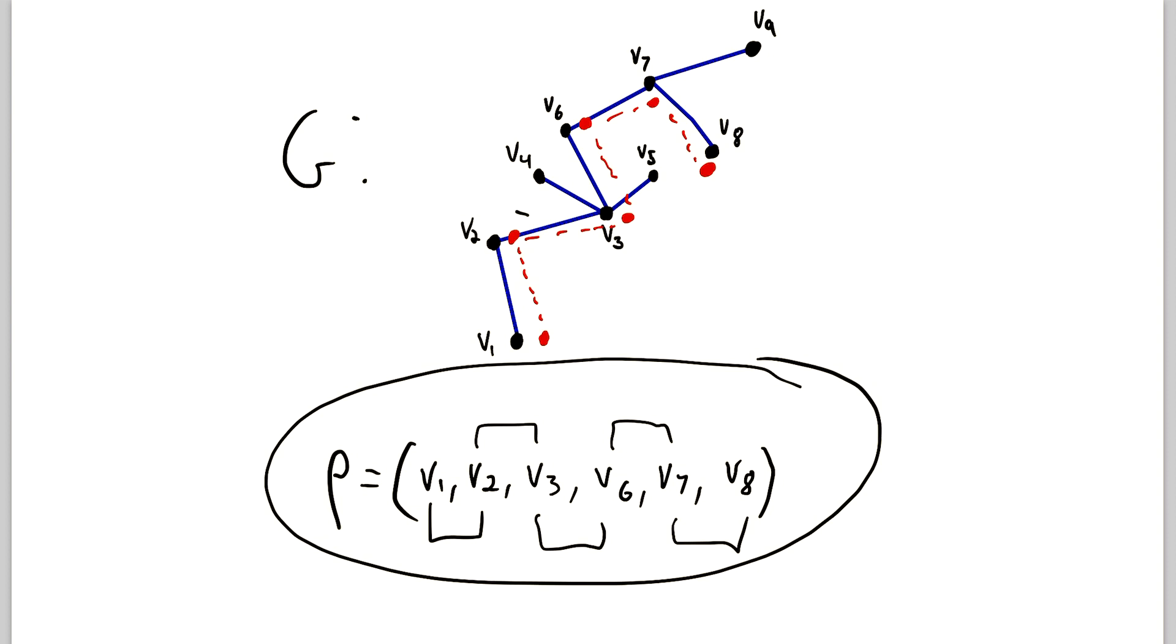Because for example, if you traversed the edge V2, V3 multiple times, then either this vertex or this vertex would have to be repeated. So you can't repeat vertices in a path. Thus, you can't repeat edges either. This is sometimes referred to as a simple path. And just the word path refers to something different. But usually, in my experience, this is what we call a path.